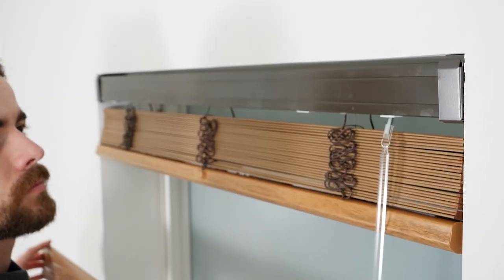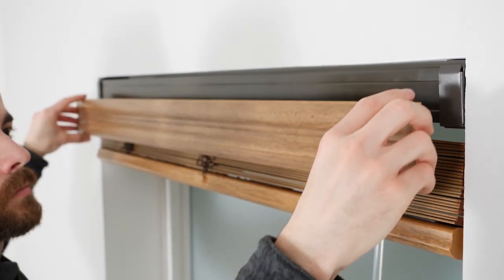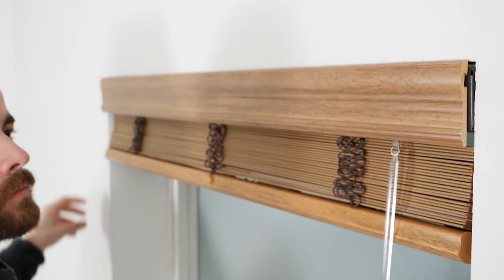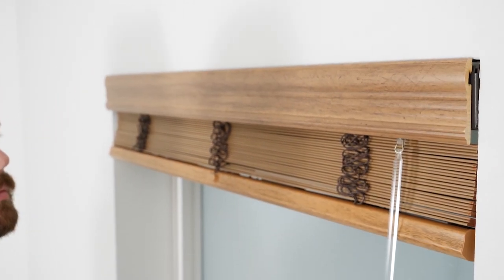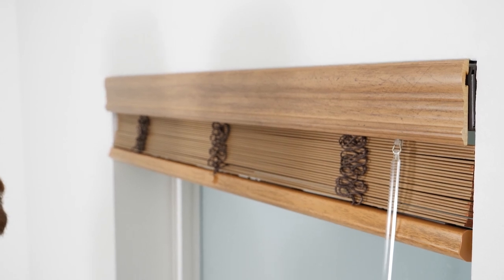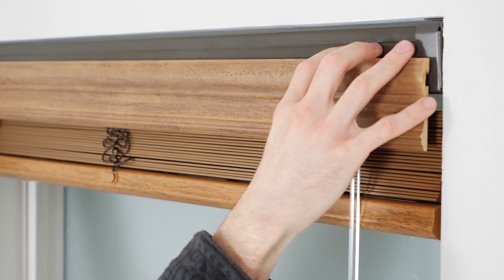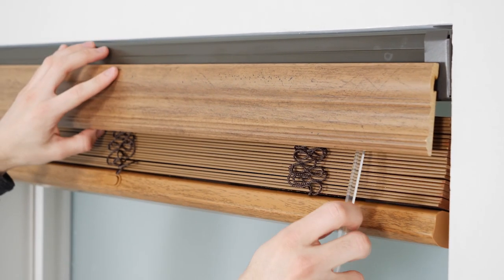Next, you'll need to attach the valance. Since the valance for this product is magnetic, all you have to do is position the valance where you want it against the headrail and let the magnets do their job. Just make sure you don't place the valance too low on the headrail so that it doesn't interfere with using the wand.